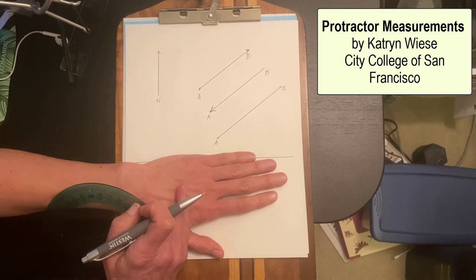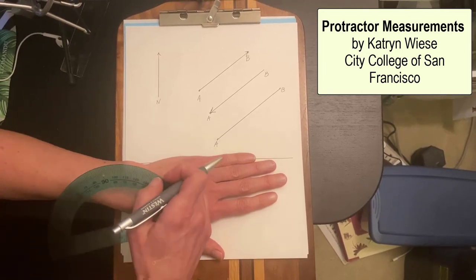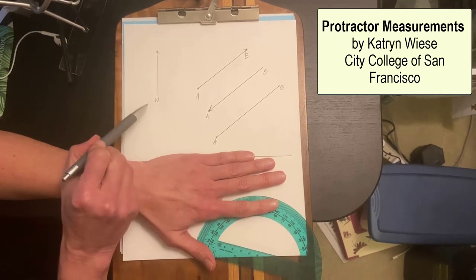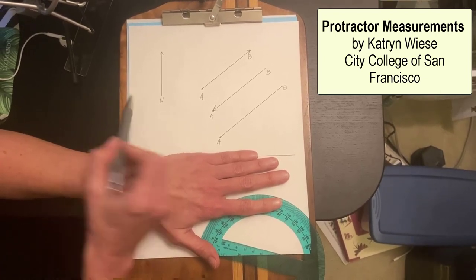When you are using a protractor to measure the orientation of a line, that means you're looking at a map. Notice the north arrow here, that means it's a map.